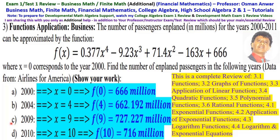C, 2009. 2009 minus 2000 is 9. Then f(9) is substitute every x by 9. Then you will get 727.227 million.